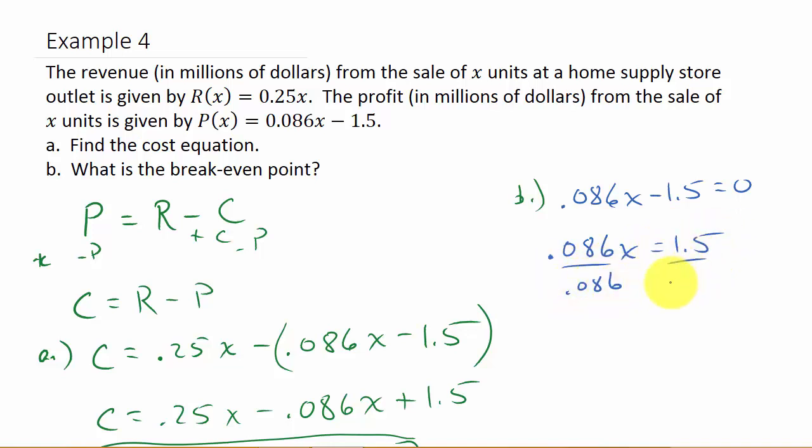Divide both sides by 0.086, and I get x is equal to 17.44 units. So, I would maybe round up and say 18 units, because you're not going to sell 0.44 of something. So, there's your break-even point.